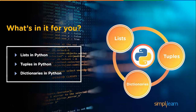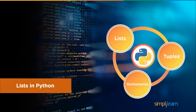First, we will learn about lists in Python, their characteristics, and explore them in Jupyter Notebook. Then, we will learn about tuples in Python, their characteristics, and also explore tuples in Jupyter Notebook. After that, we will have a look at dictionaries in Python, their characteristics, and head to Jupyter Notebook to understand dictionaries. So, let's start with lists in Python.